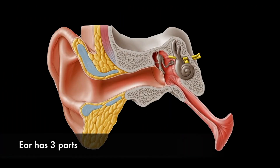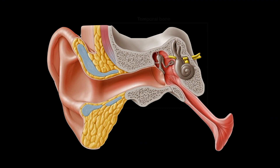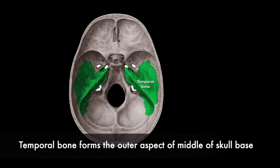The ear has three parts: outer ear, middle ear, and inner ear. The inner ear, middle ear, and most of the external ear are within the skull base bone known as the temporal bone. The temporal bone forms the outer aspect of the middle skull base.